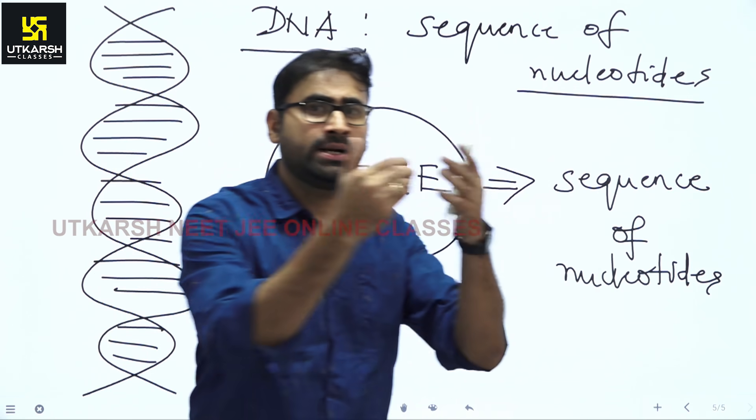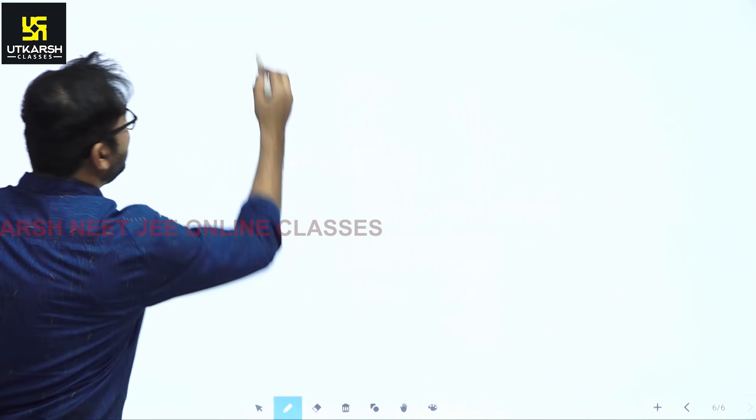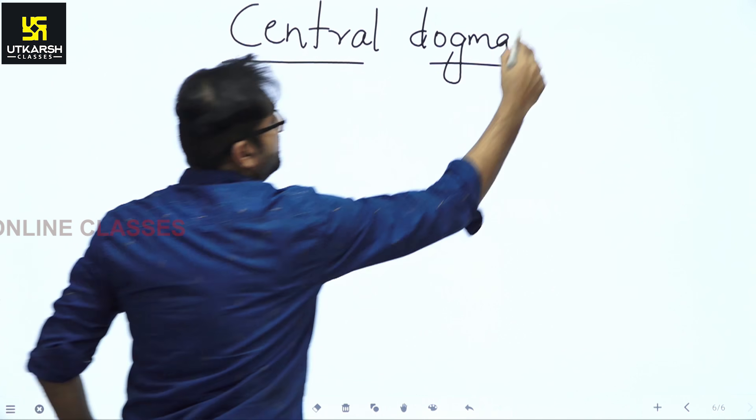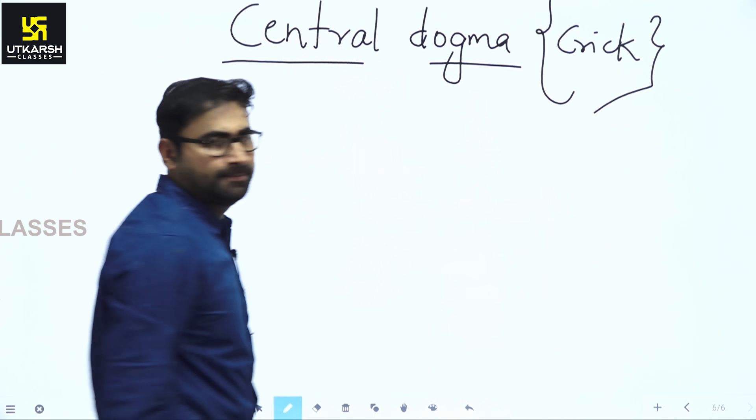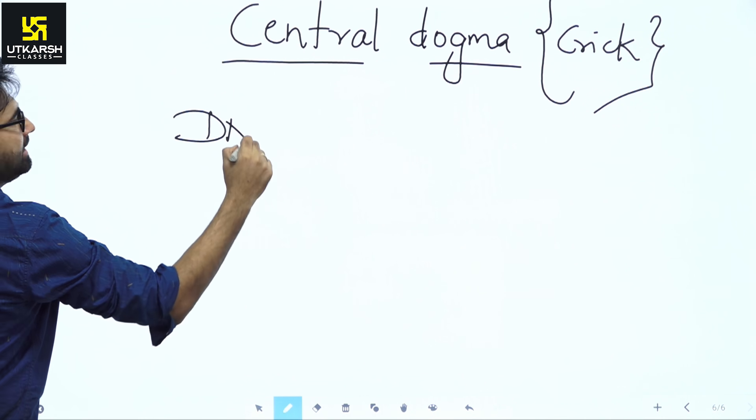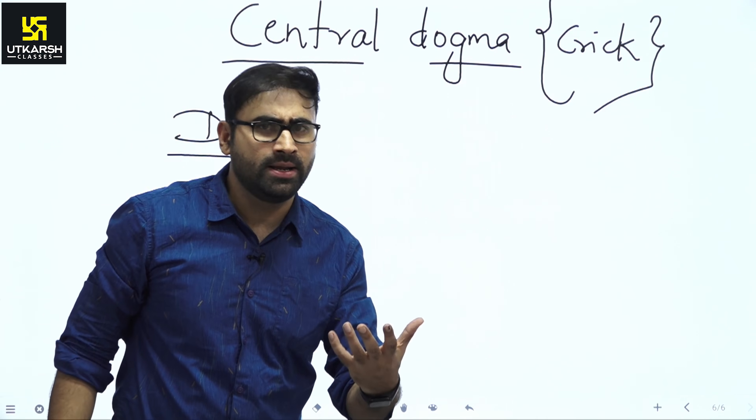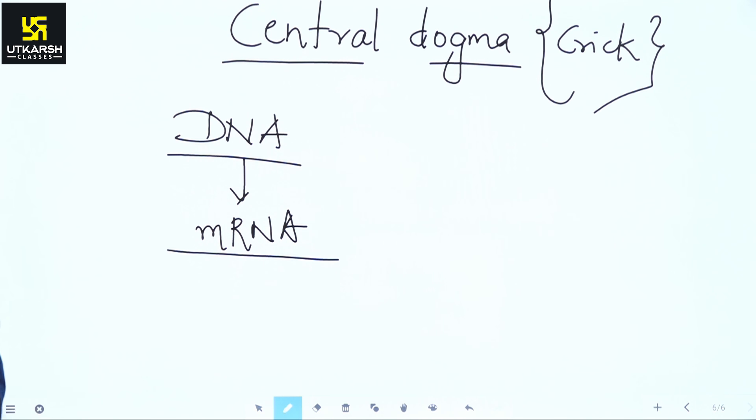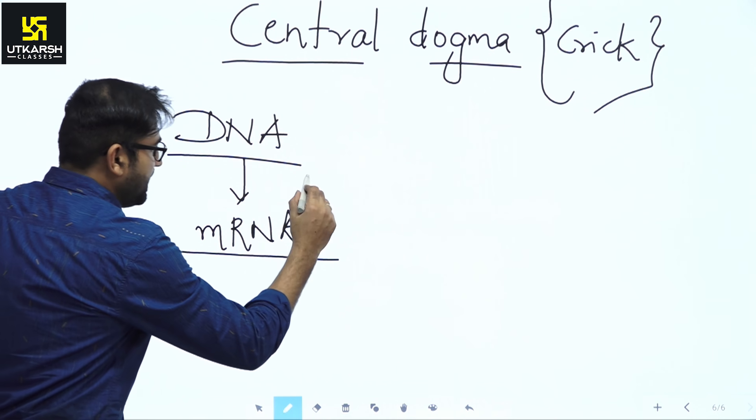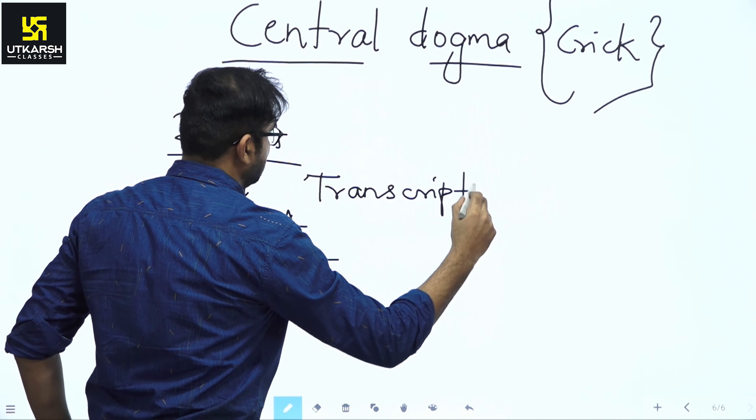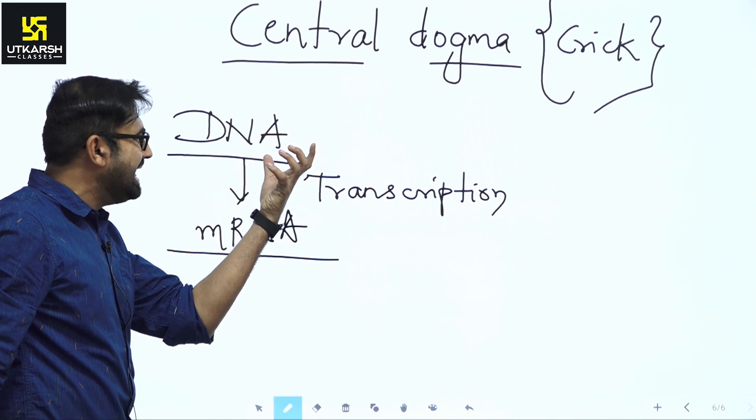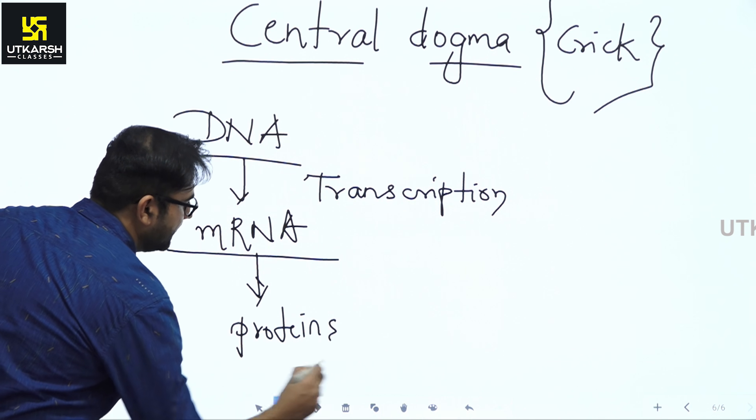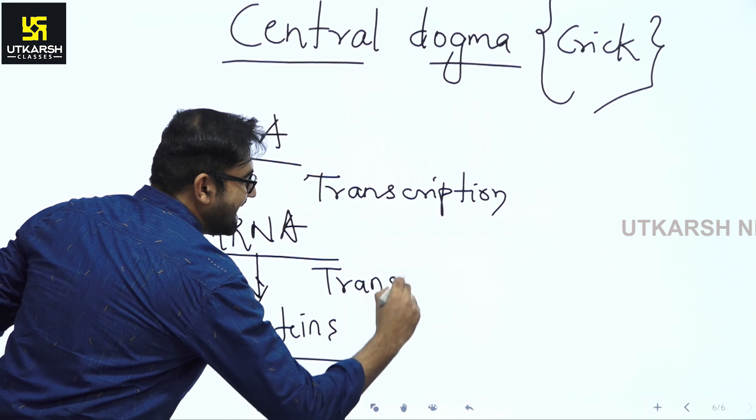Now, students, how does a gene control a character? To understand how a gene controls a character, we have to understand a concept called central dogma. Yes, central dogma was a concept given by Crick. Now, what he said? He said that a DNA which we understand is a nucleic acid is a sequence of nucleotide. This DNA molecule codes for a messenger RNA also called mRNA by a process called transcription. Yes, transcription is a process by which DNA is converted into mRNA. And this mRNA forms proteins by a process called translation.